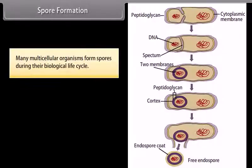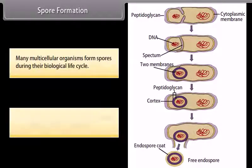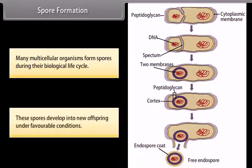Spore formation: many multicellular organisms form spores during their biological life cycle. These spores develop into new offspring under favorable conditions.